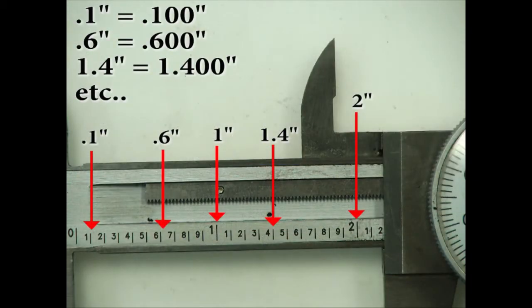The linear scale shown here is a little bit over 2 inches. Inches are broken up into tenths of an inch. Each tenth of an inch is equal to 100 thousandths of an inch.